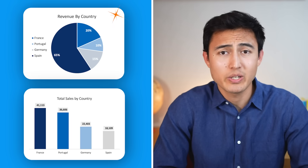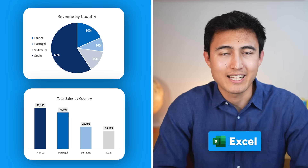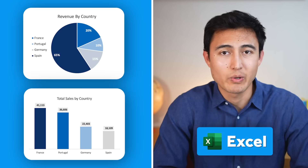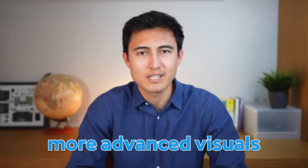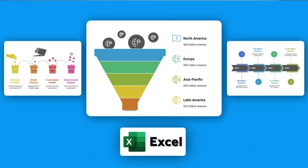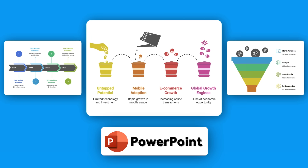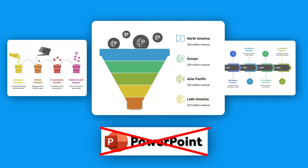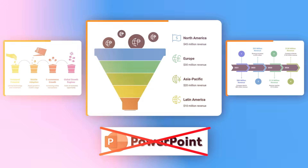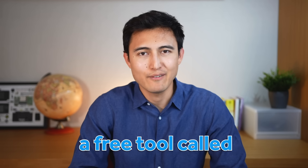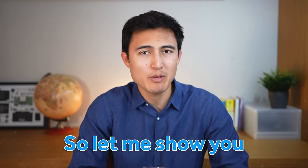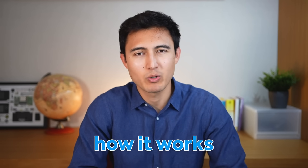For creating basic visuals like a pie chart or a column chart, Excel works great. But when it comes to more advanced visuals like these, it doesn't quite do the job. Even in PowerPoint, it would take you a very long time to design something like this. That's where a free tool called Napkin AI comes in, so let me show you how it works.